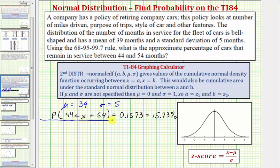Remember z-scores indicate how far a given data value is away from the mean. Where the z-score is equal to x minus mu divided by sigma. So as an alternative approach, let's calculate the z-score for x equals 44 and for x equals 54.